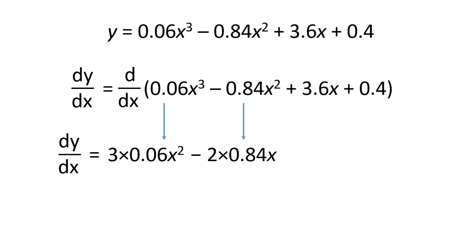The next one, we have 2 times 0.84 times x, so the power's gone down by 1 and we've multiplied by the original exponent, and it's negative because that was negative before. This goes to 3.6 and then the 0.4 just goes to 0.